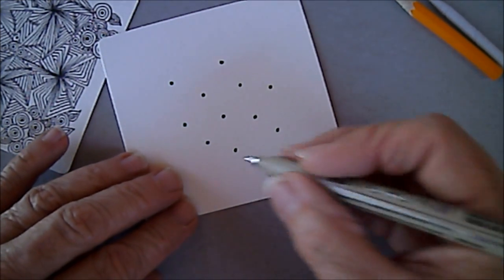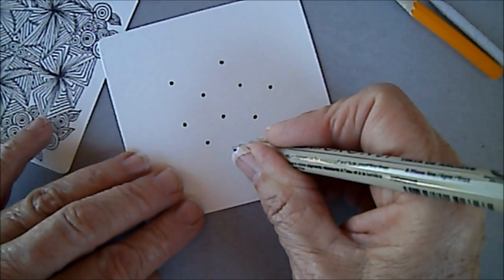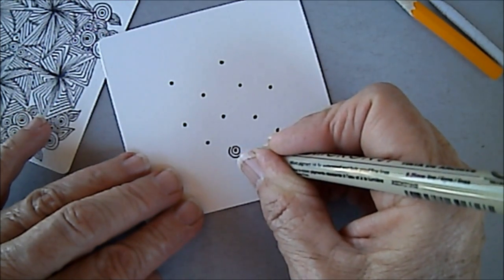We just put, and I filled mine in. I like the black of mine in. I like that look. And now we're just going to draw circles around the outside.